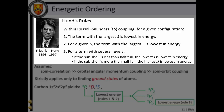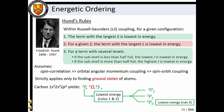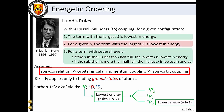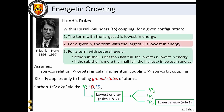Within the Russell-Saunders coupling scheme for a given configuration, the term with the largest total spin angular momentum is lowest in energy. For a given total spin angular momentum, the term with the largest total orbital angular momentum is lowest in energy. For terms with several levels, if the atomic subshell is less than half full, the lowest total angular momentum level is lowest in energy, whereas if the subshell is more than half full, it is the highest J level that is lowest in energy. For the ground state configuration of the carbon atom, this treatment yields a triplet P0 ground state, with triplet P1, triplet P2, singlet D2, and singlet S0 excited levels occurring at increasing energies.